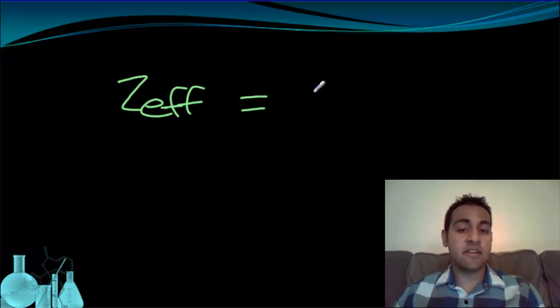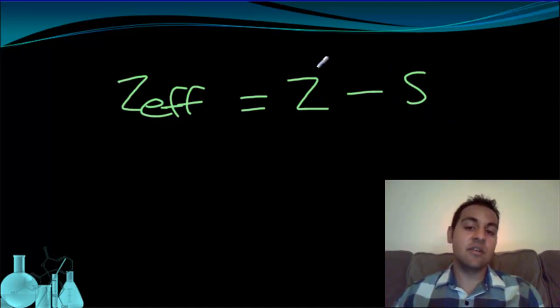In a nutshell, Z-effective represents how the protons, the nuclear charge, is modified, their strength is modified in a negative way, by the number of shielding electrons or non-valence electrons. Now let's go through and explain some of this using this idea of Z-effective and shielding electrons versus how many protons are pulling on electrons.